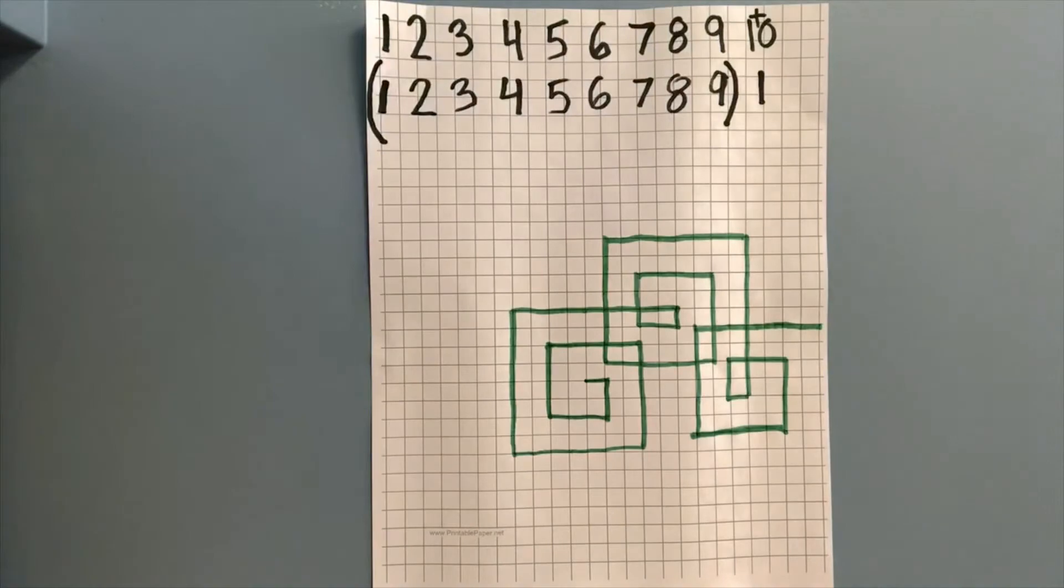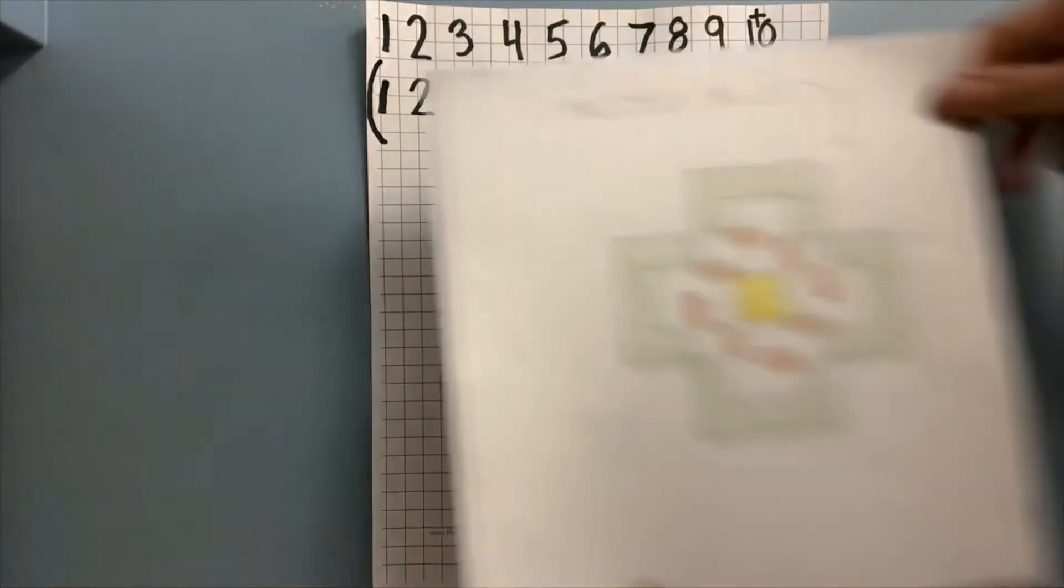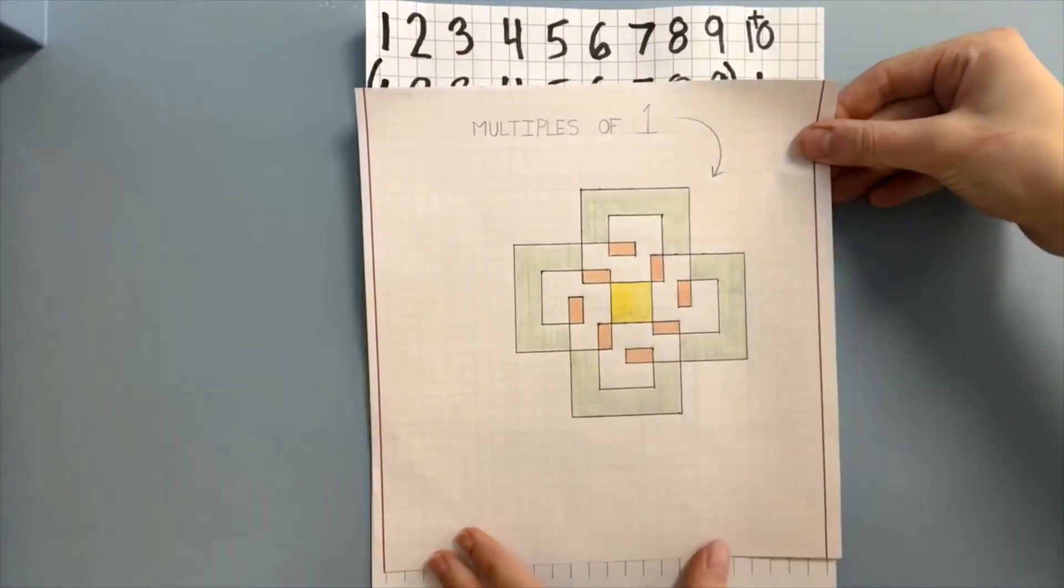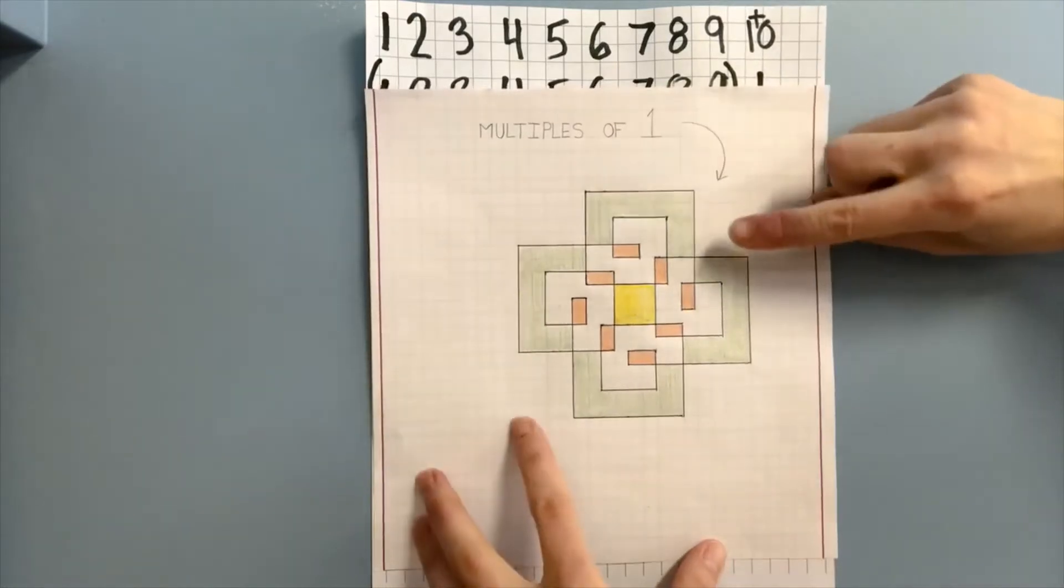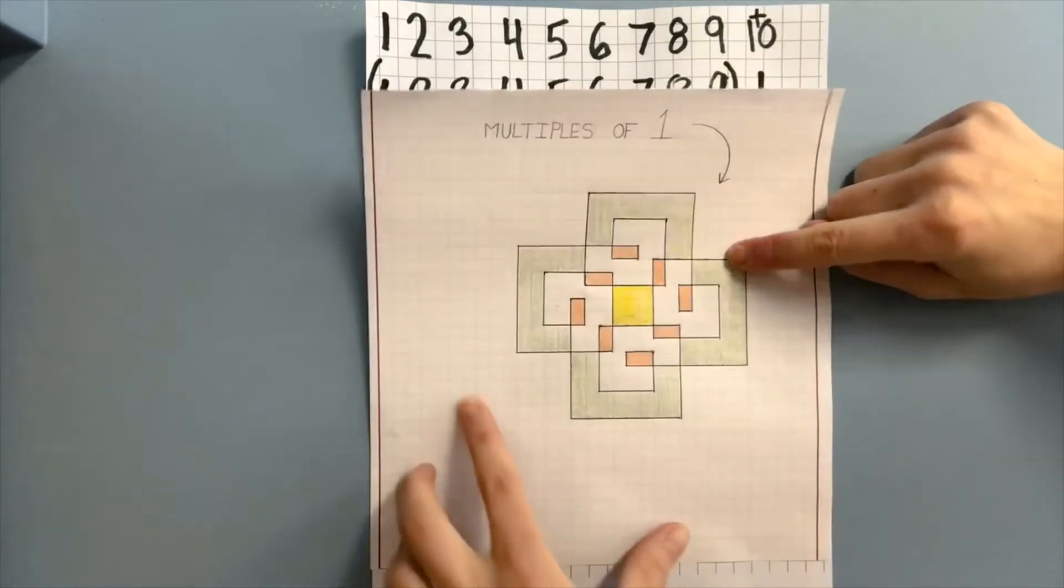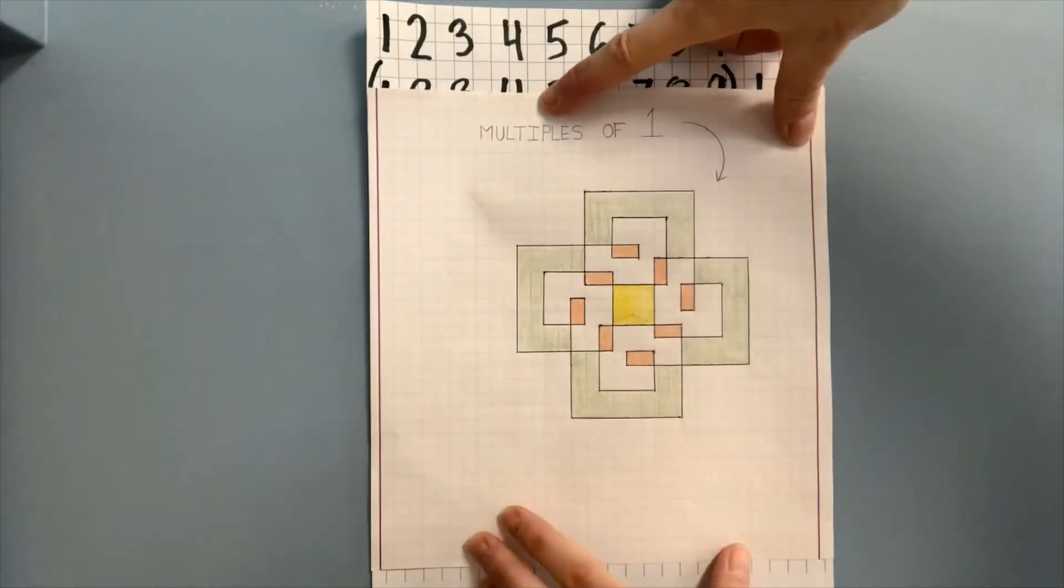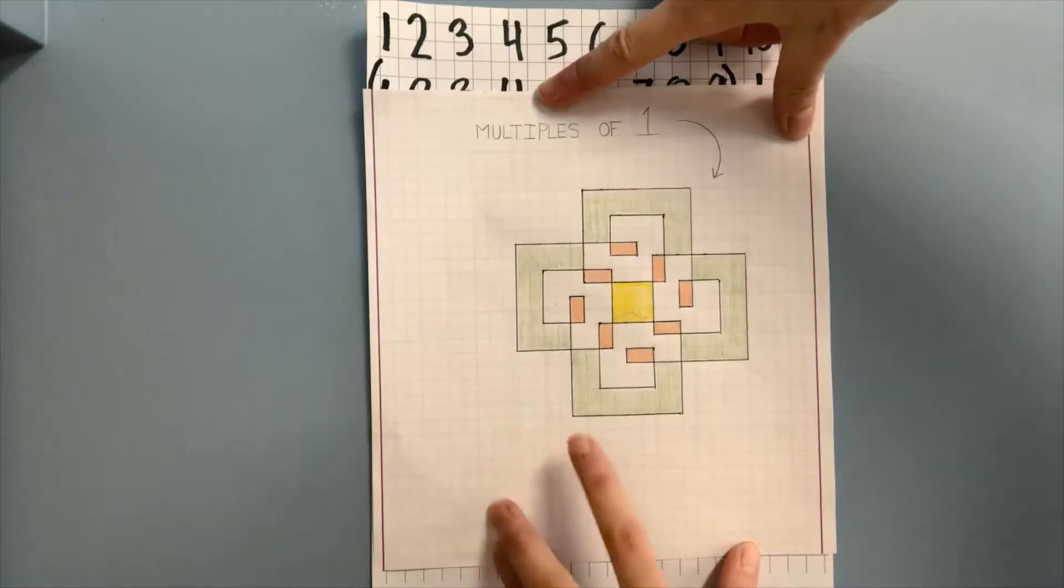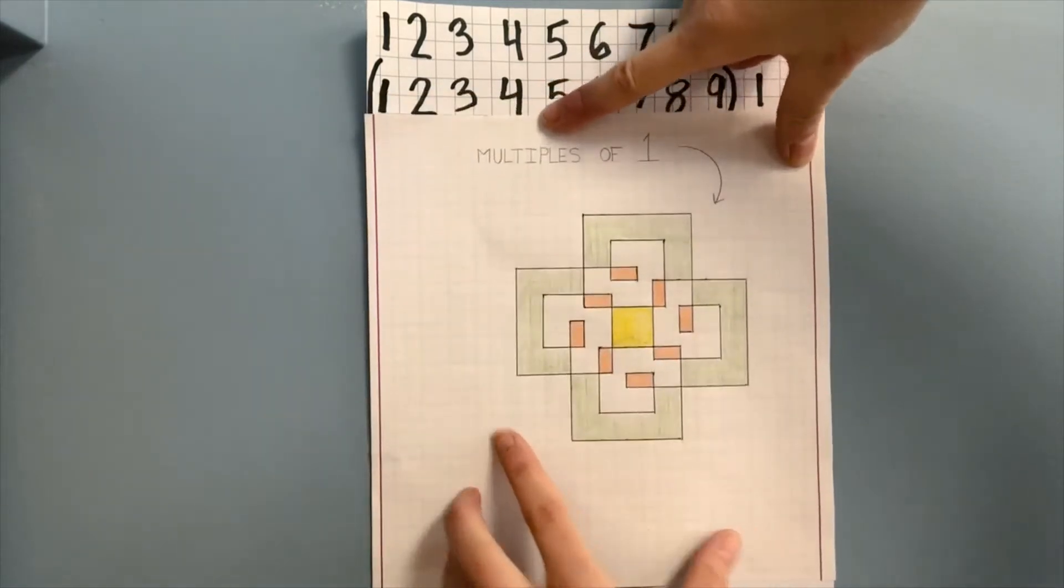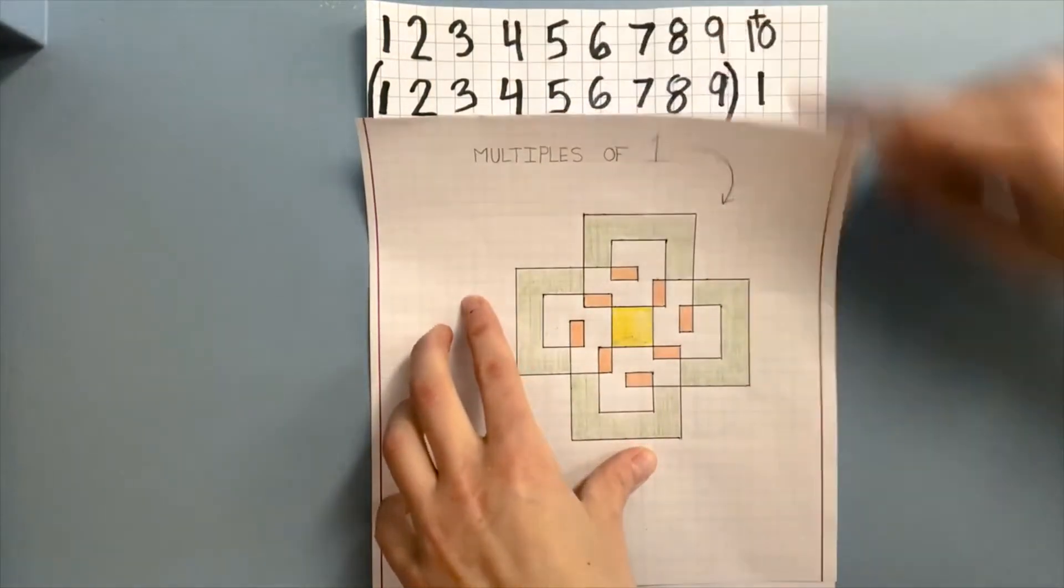In the end, you get something that looks like this. Pretty cool, huh? And this is where the colored pencil crayons that I suggested you grab come in handy. Because you can finish off your product by coloring in all the spaces to create a really cool design. So this is the shape of spiral lateral you get when you use multiples of one, as we did up here.